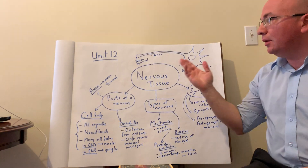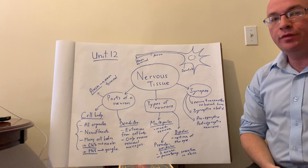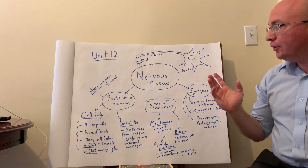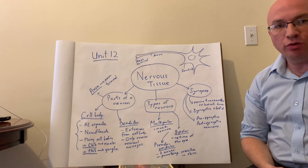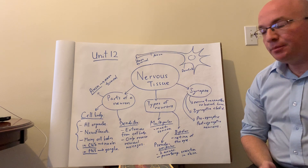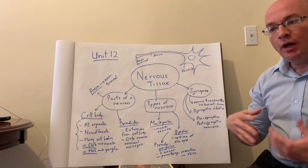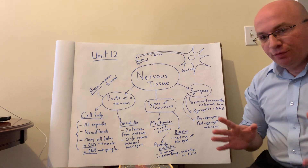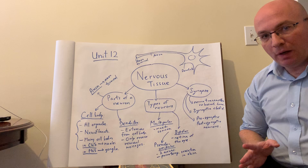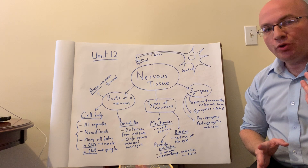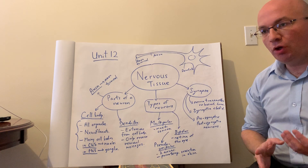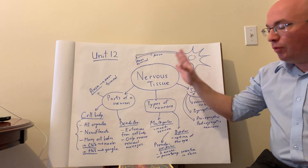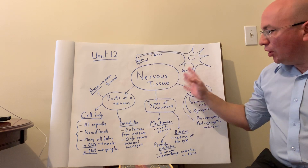Welcome to Chapter 12 in the Anatomy and Physiology II course. Today we're going to be discussing an introduction to the nervous system, particularly histology and some anatomy of the nervous tissue. Before we get into other chapters where we talk about the parts of the brain, the different lobes, and the peripheral nervous system, we want to generally talk about what is involved in the histology of nervous tissue.